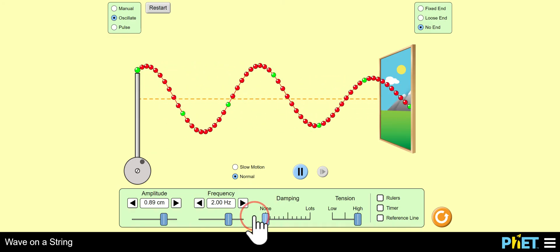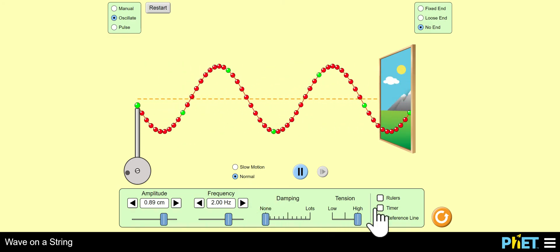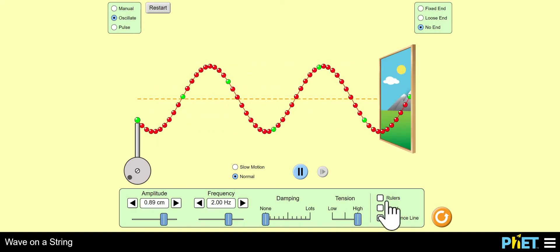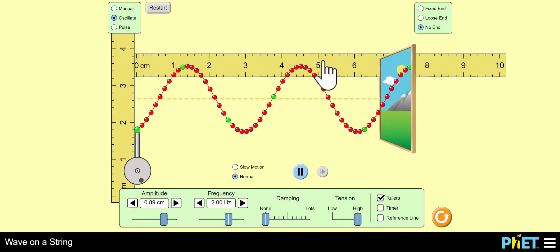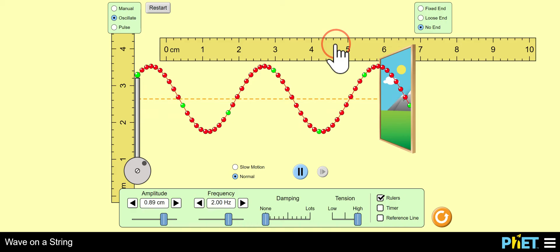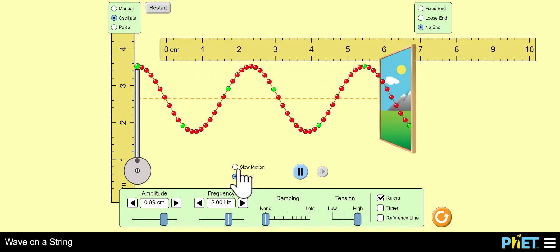So let's turn the dampening to zero. Tension, leave it as high. Later on, you'll change the tension with the slider. Definitely want the ruler. That's huge. The ruler is drag and drop. Let's go to slow motion.